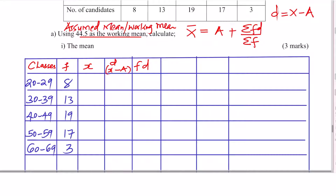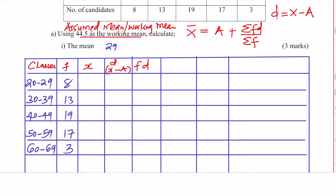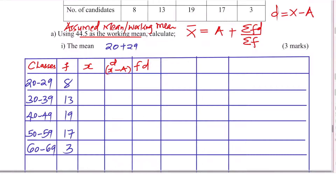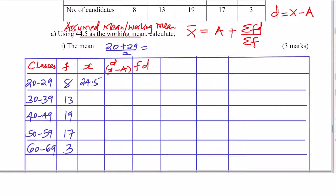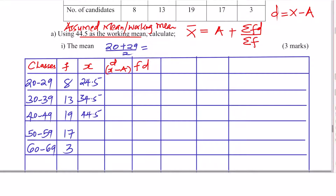Let's get x — x is the midpoint of these classes. For the first class 20 to 29, you take 20 plus 29 and divide by 2, giving 24.5. Similarly: 30 plus 39 divided by 2 gives 34.5; 40 plus 49 divided by 2 gives 44.5; 50 plus 59 divided by 2 gives 54.5; and 60 plus 69 divided by 2 gives 64.5.